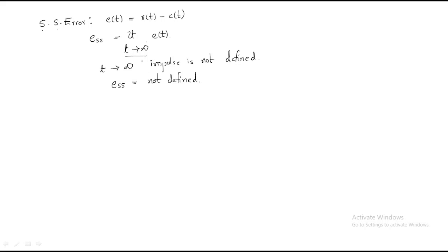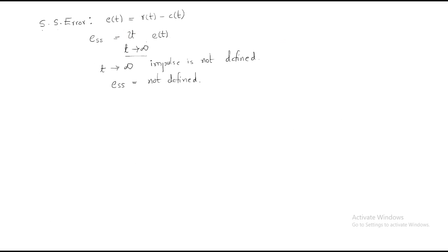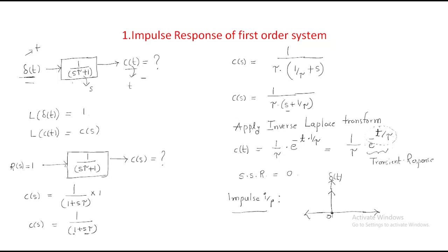This is about the impulse response — whenever an impulse is given, we get a corresponding output called the impulse response. I hope all of you understood the session. Thank you.